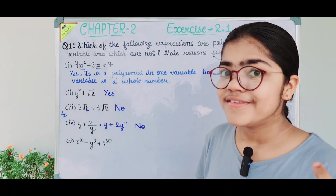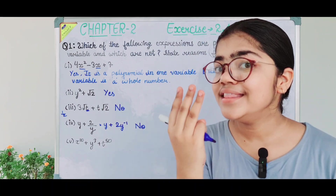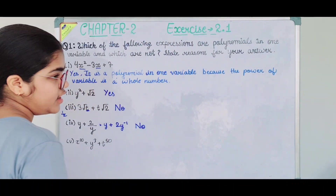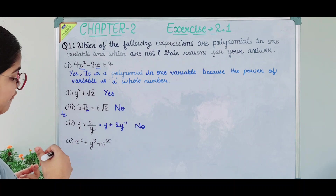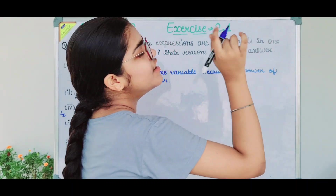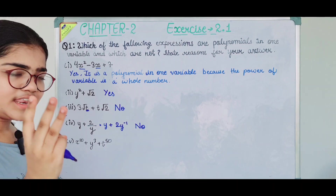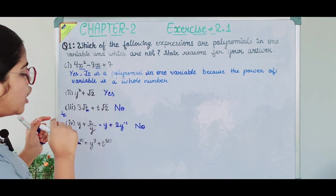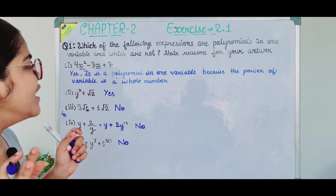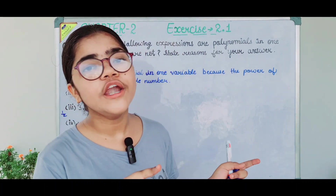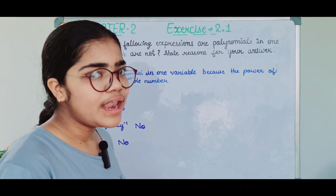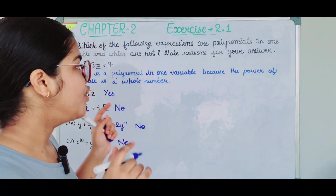The last part: the power of x is a whole number, so it is a polynomial. But it is not a polynomial in one variable because there are three variables in this expression. So this is why it is a polynomial but not a polynomial in one variable. That was our first question.